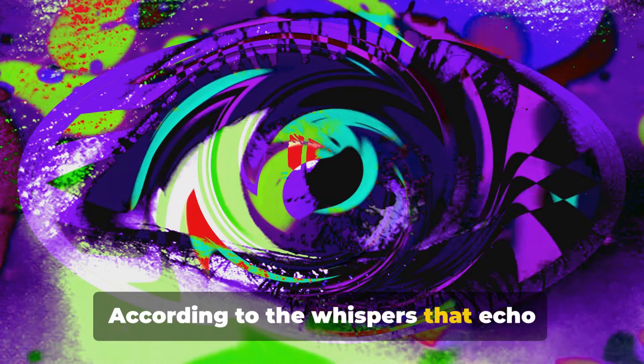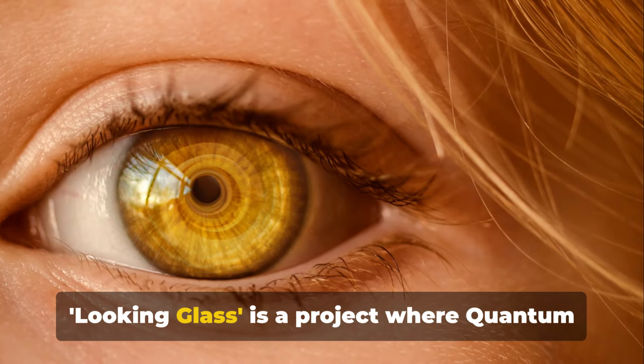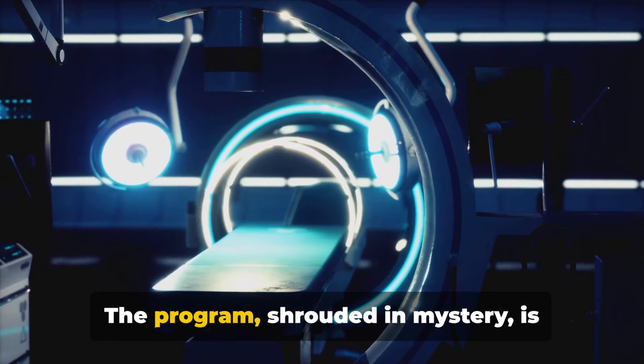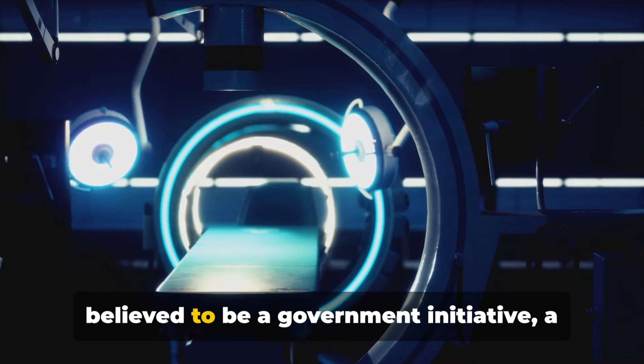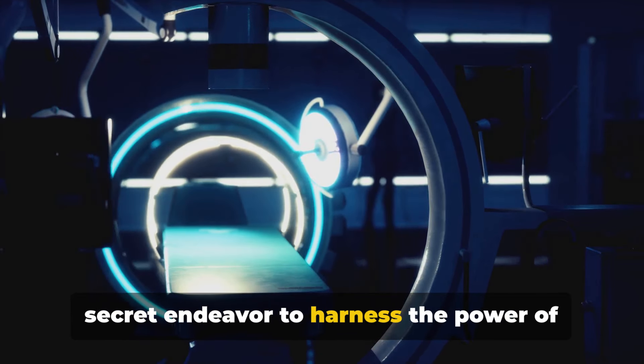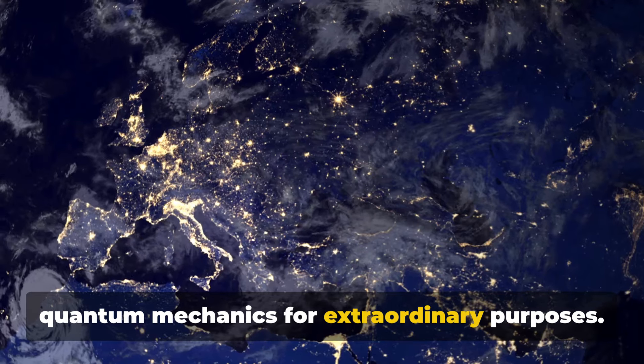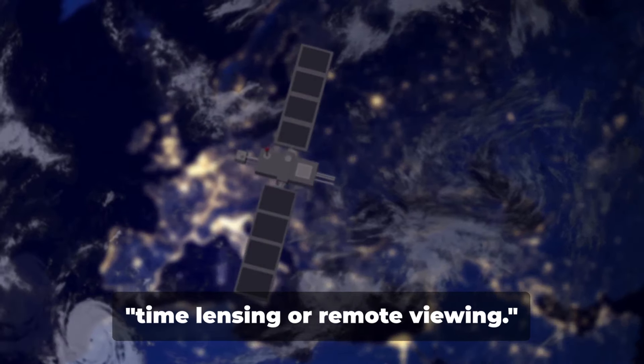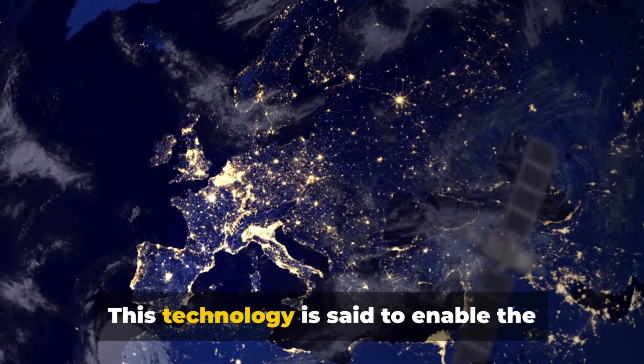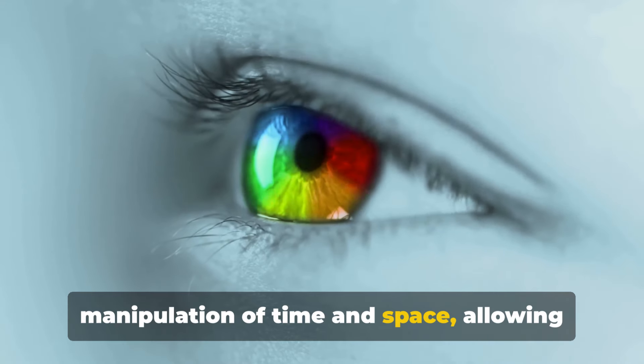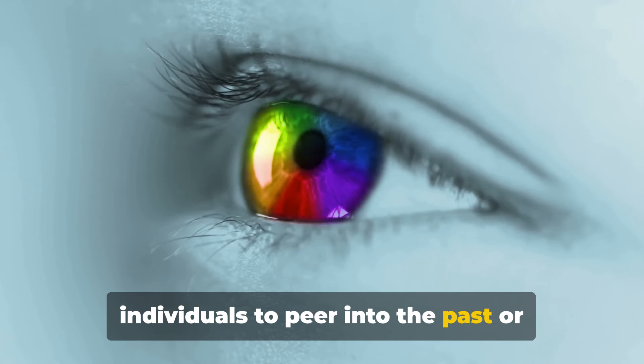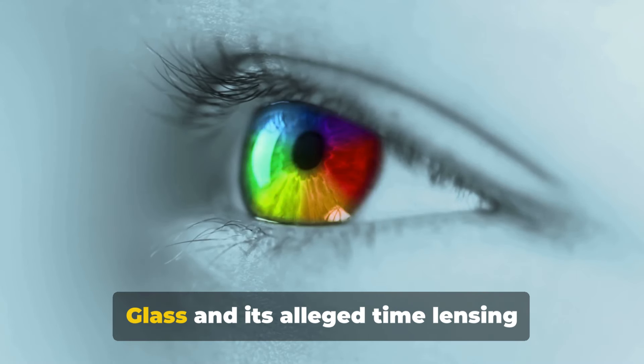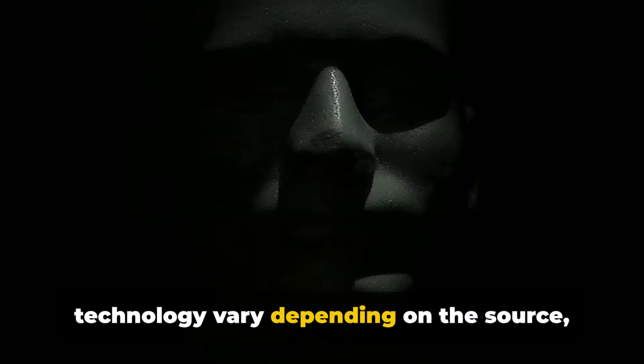According to the whispers that echo through the corridors of the Internet, Looking Glass is a project where quantum jumping is explored as a means of time travel or dimensional shifting. The program, shrouded in mystery, is believed to be a government initiative, a secret endeavor to harness the power of quantum mechanics for extraordinary purposes. Project Looking Glass involves the development of a technology capable of time lensing or remote viewing. This technology is said to enable the manipulation of time and space, allowing individuals to peer into the past or future or to access alternate dimensions or realities.